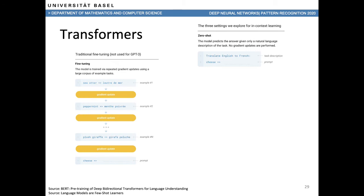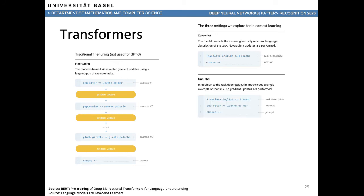GPT-3 on the other hand can work in zero-shot mode: the model predicts the answer given only a natural language description of the task, with no gradient updates. You just say 'translate English to French' and then provide the word to translate, like 'cheese.' You can also help it with one-shot learning by giving a single example such as how to translate 'sea otter,' and then ask it to translate 'cheese' for inference.